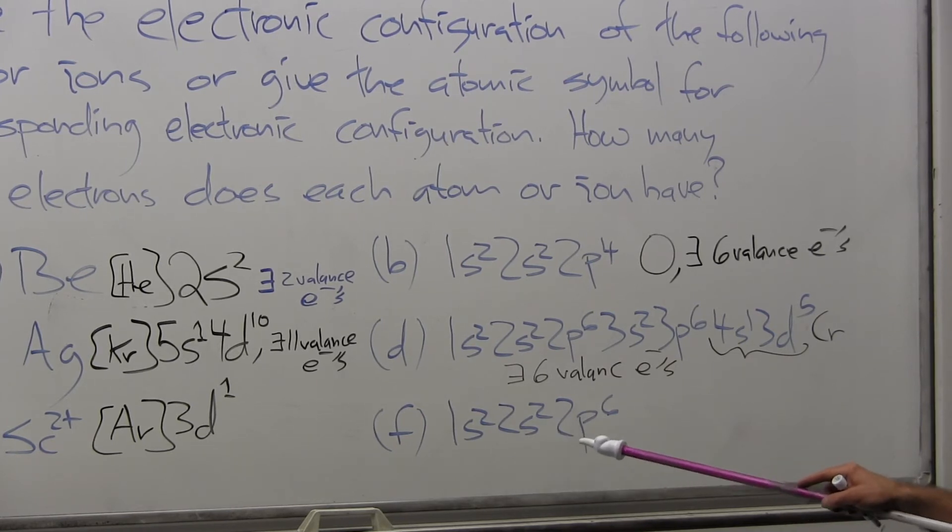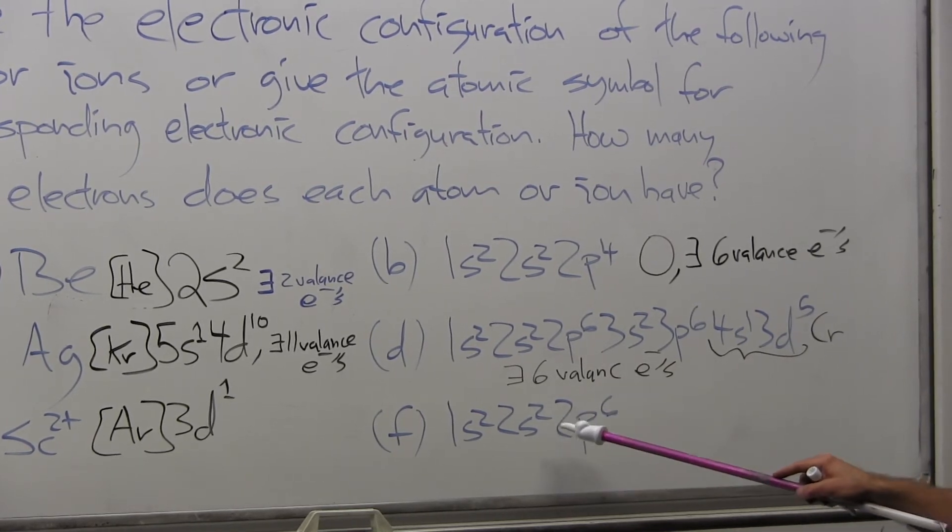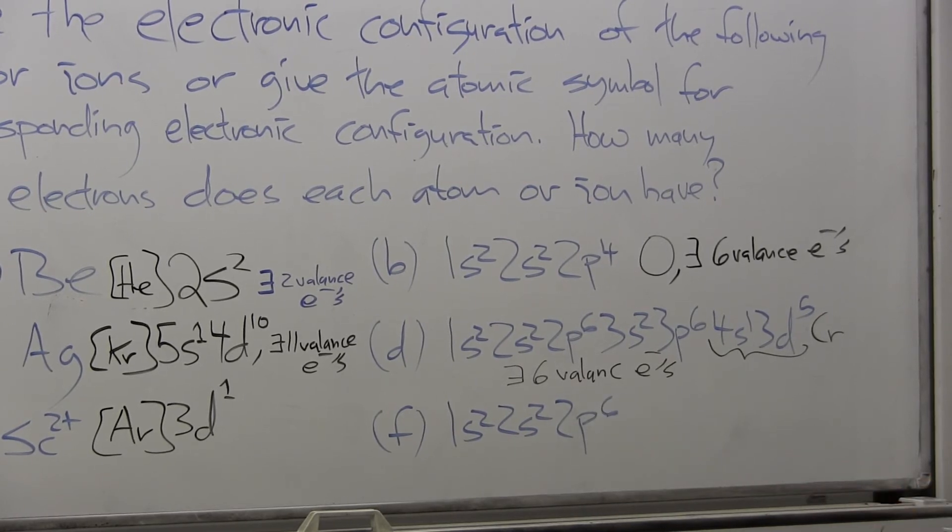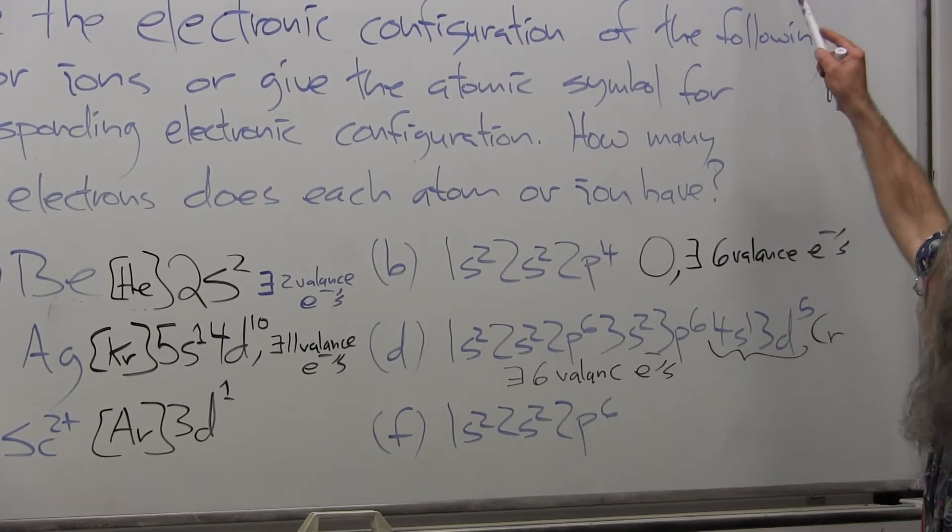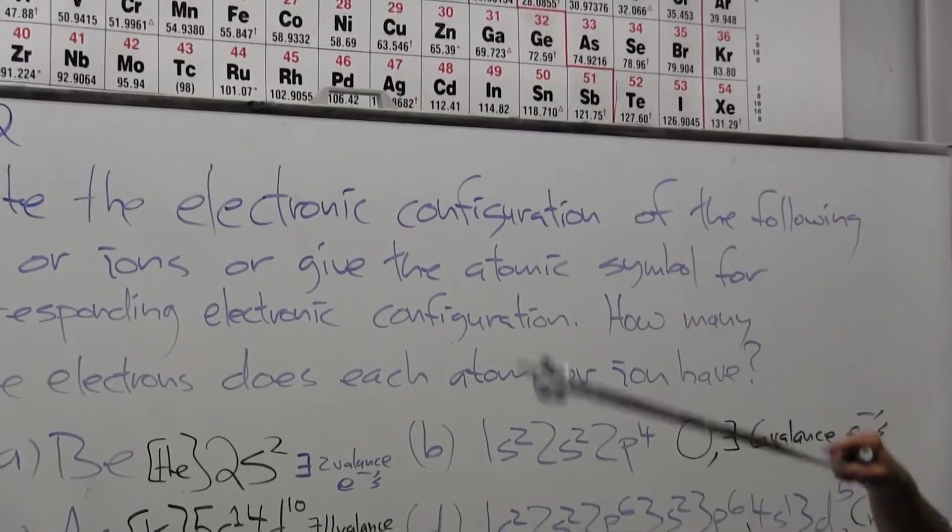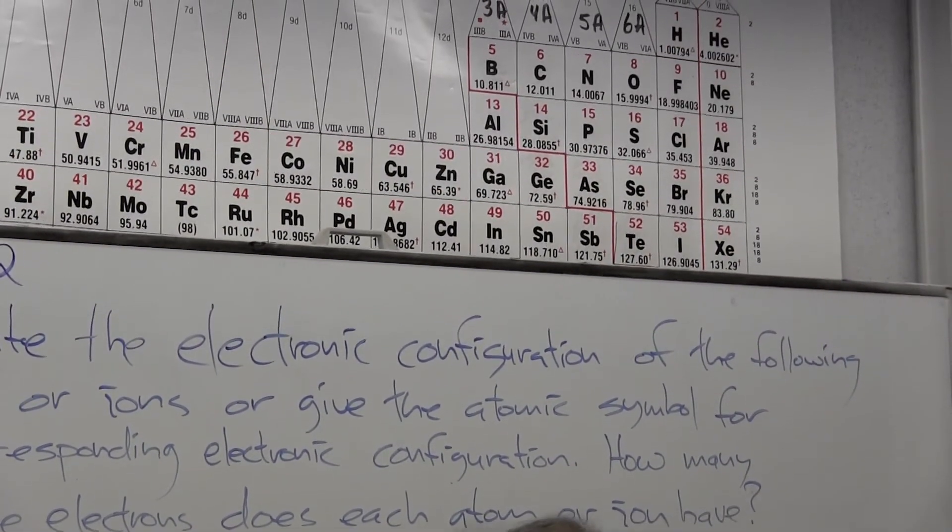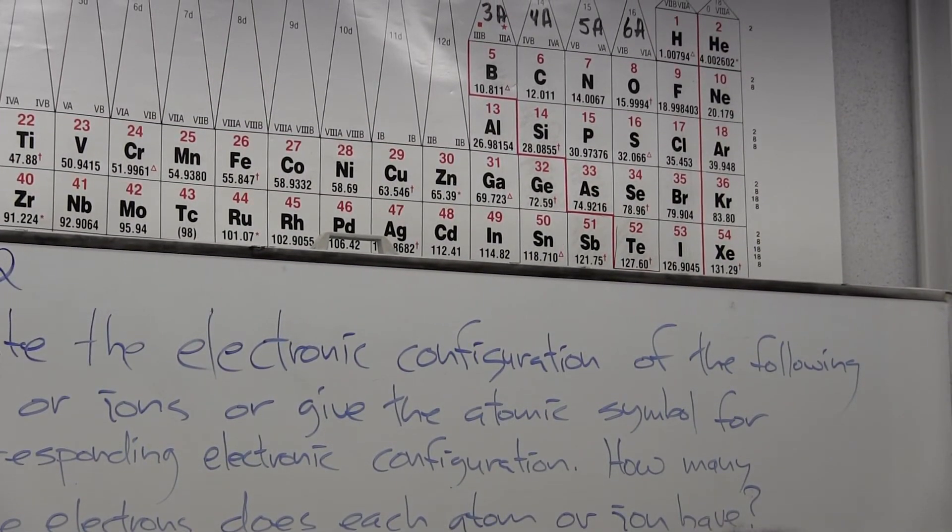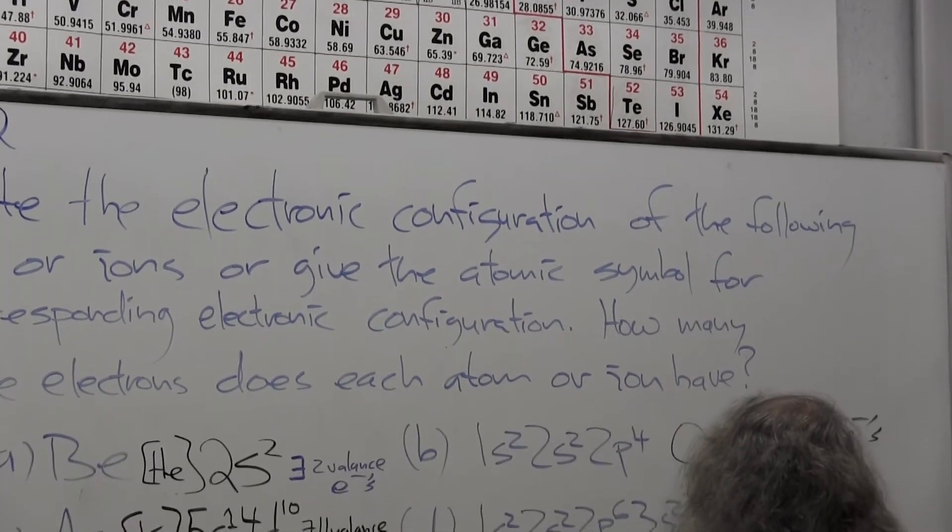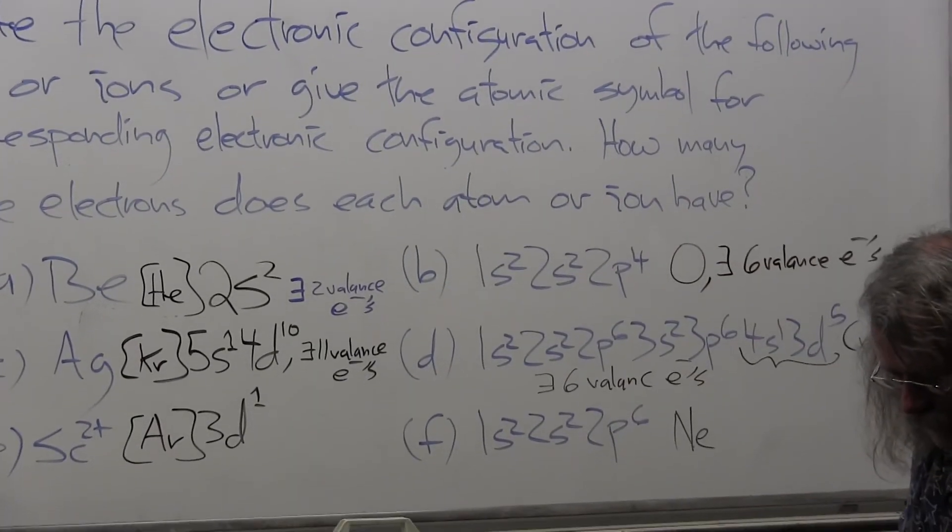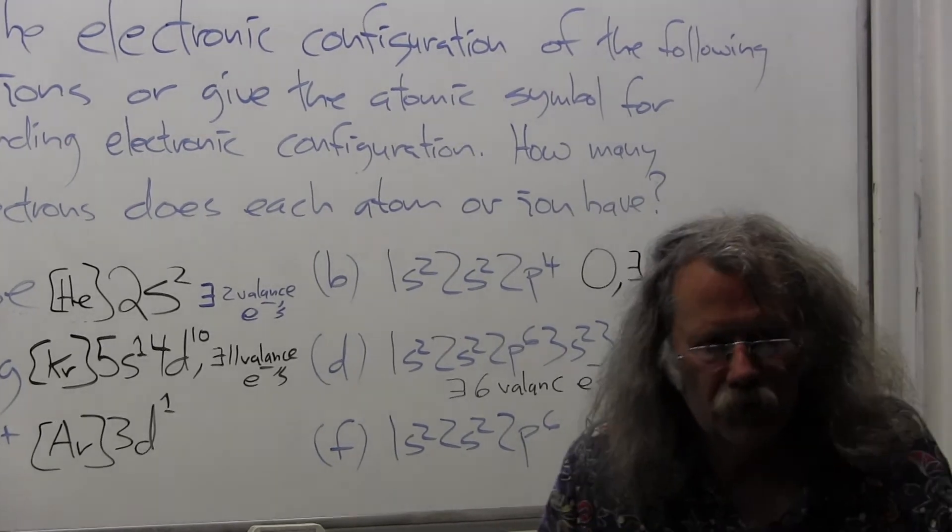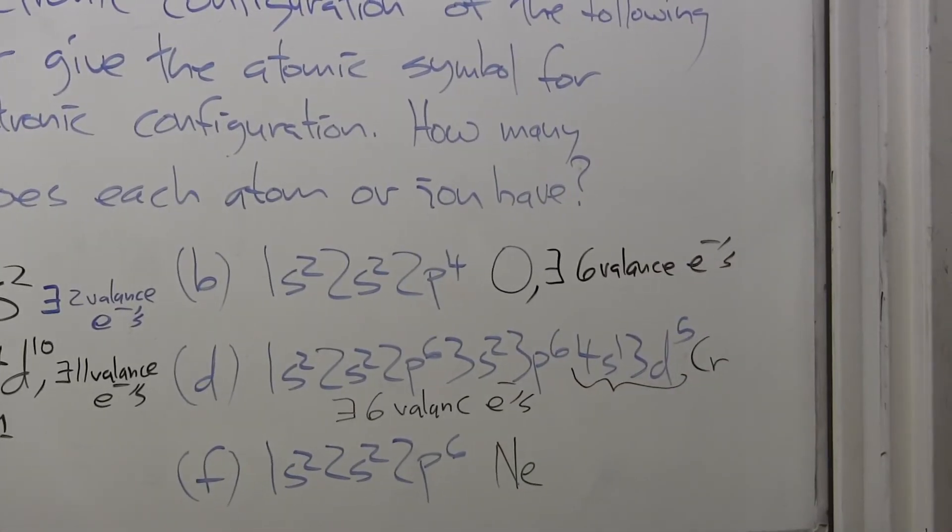They're in the s and p manifold, and they're both full. I have two s electrons, I've got all my p electrons, so this corresponds to the neon electron configuration, which is the noble gas configuration.